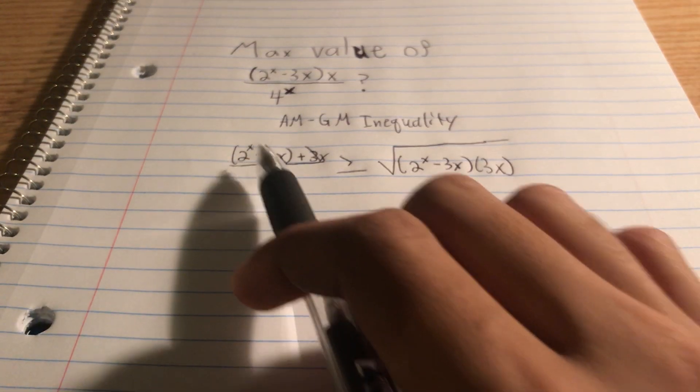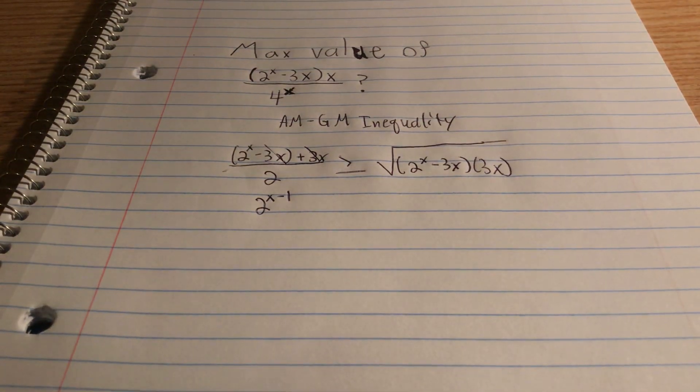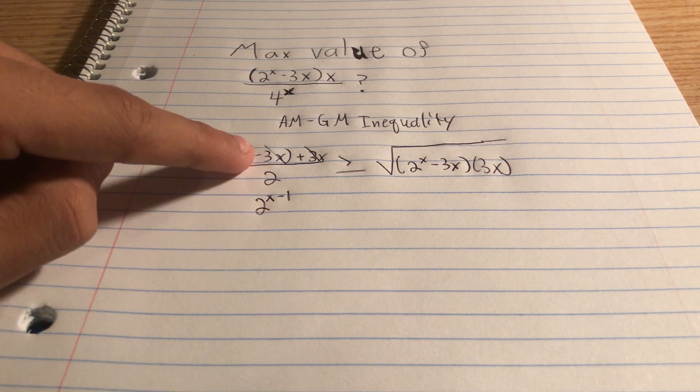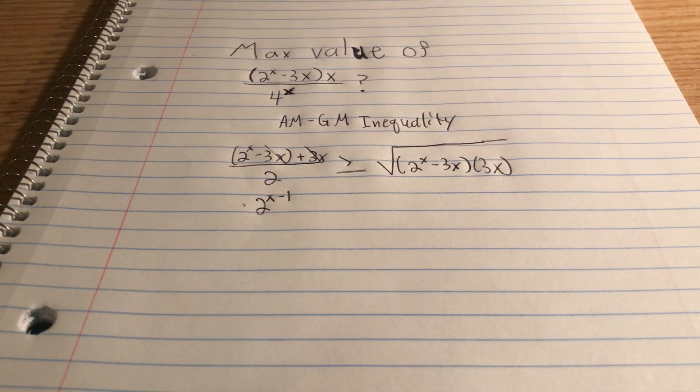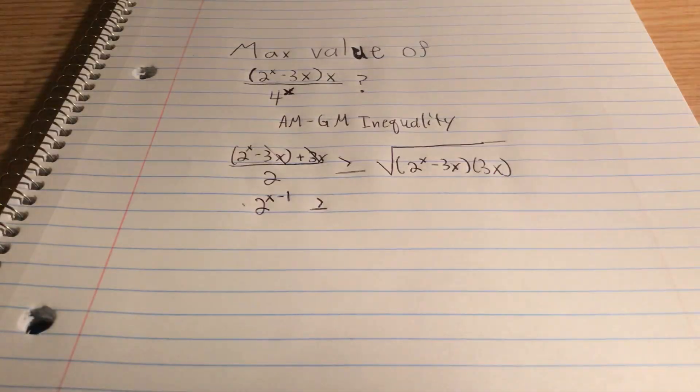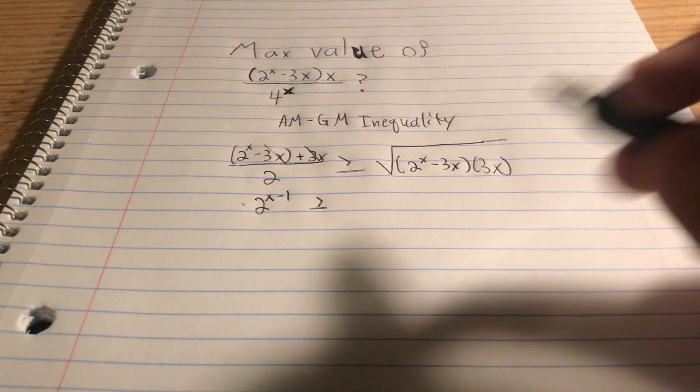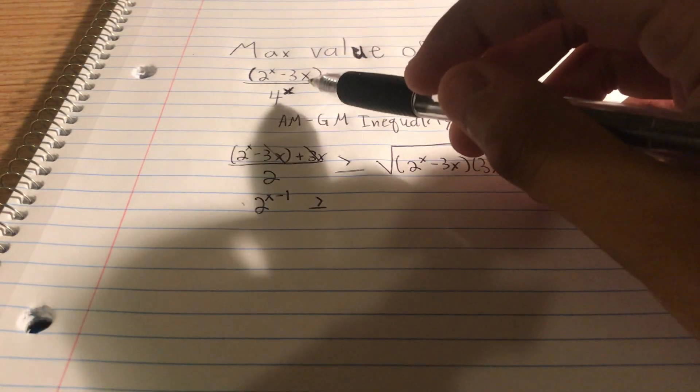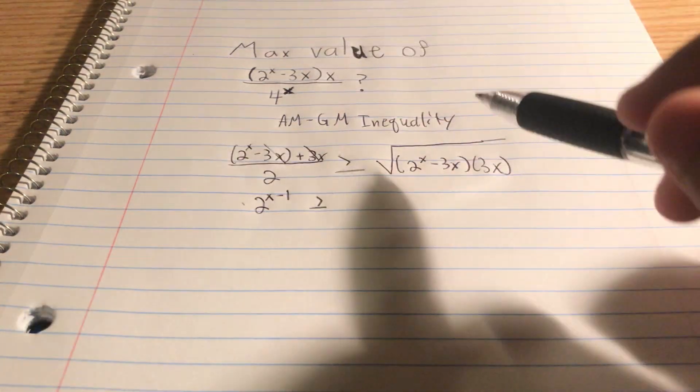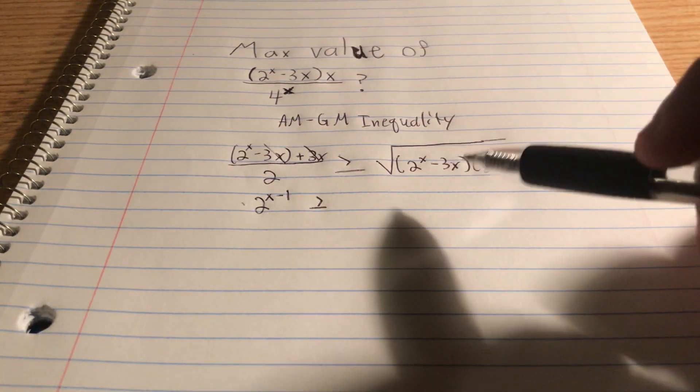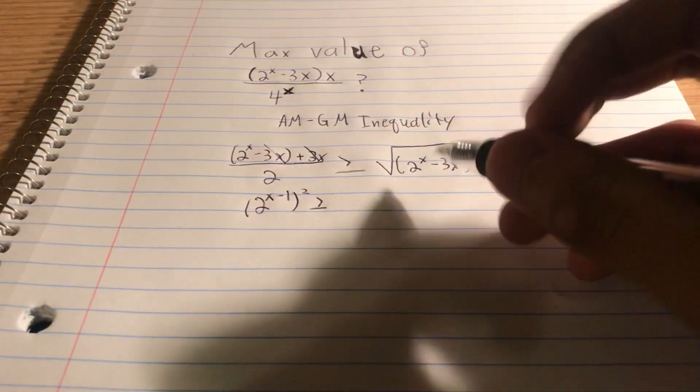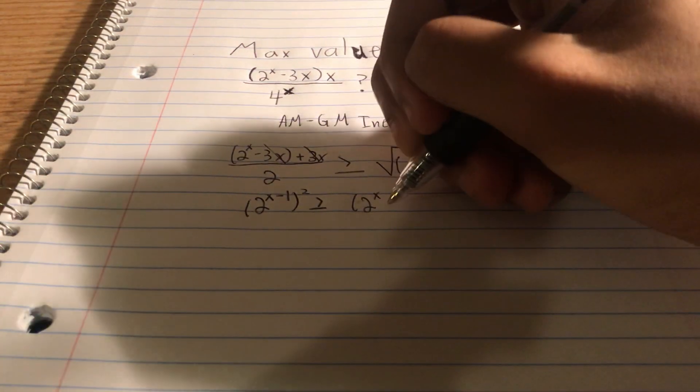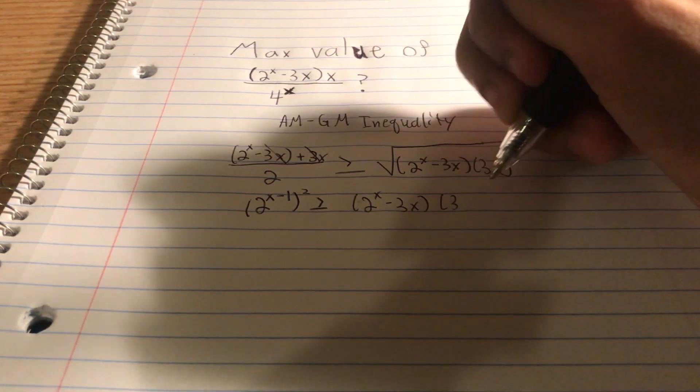And then we can change this 2 to the power of x divided by 2 as 2 to the power of x minus 1. So this is exponent subtraction right here because you're dividing a 2 from this 2 to the power of x. And then you have greater than or equal to, again, the square root of this. But I'm not going to write that down because I'm going to first square both sides because we don't want the square root here. There's no square root in the original function. And remember, we want the original function to be over here. We want to manipulate it for an original function to be here. So let's square both sides. So let's square this. And then squaring this, we'll get rid of the square root. So we just have 2 to the power of x minus 3x times 3x. Nice.